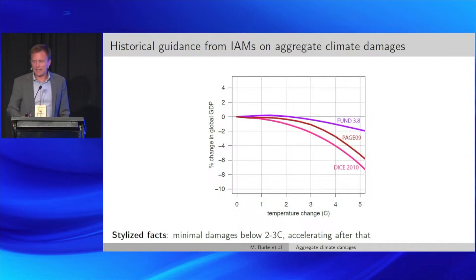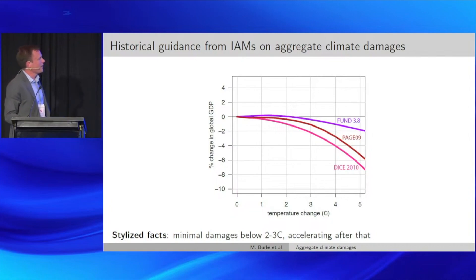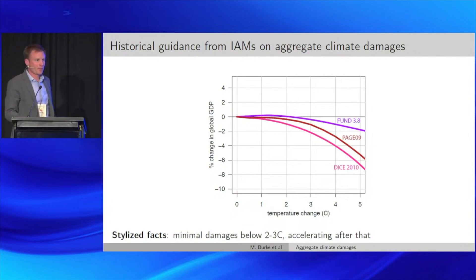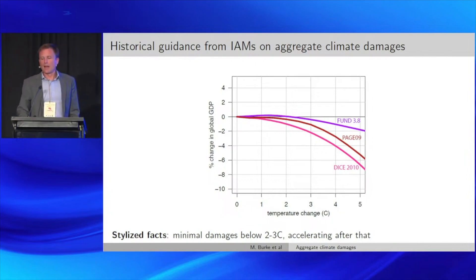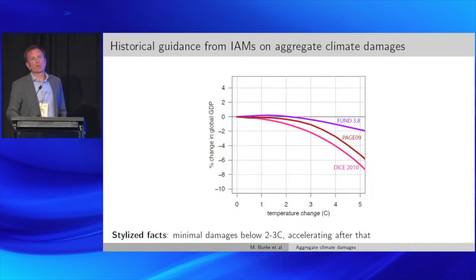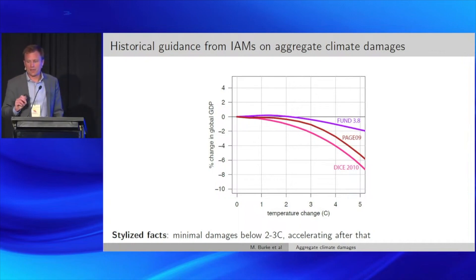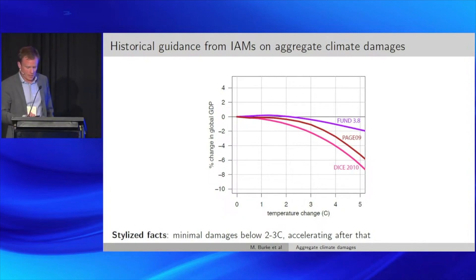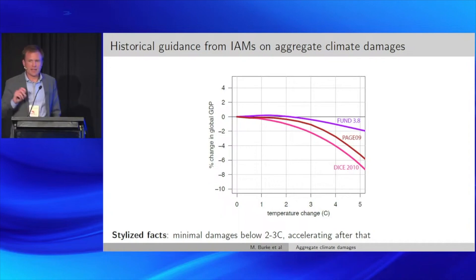Here is the obligatory damage function plot — I reversed the sign on the y-axis. Tama showed something like this. These are damages in three different damage functions from the three leading integrated assessment models in the first interagency working group that Max showed. These were actually used to estimate the social cost of carbon. I want to call your attention to the magnitudes here.